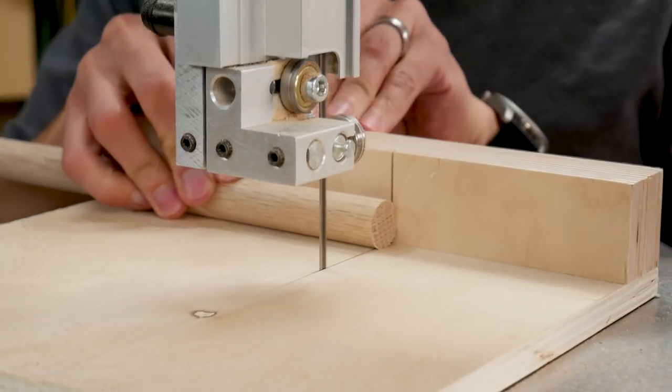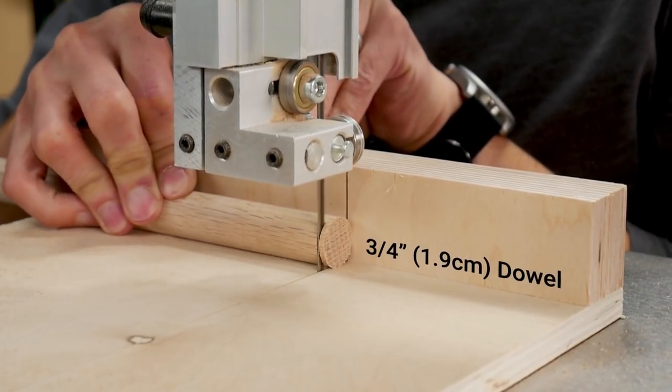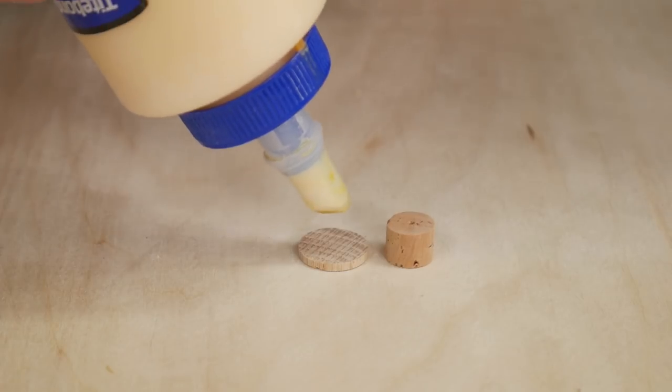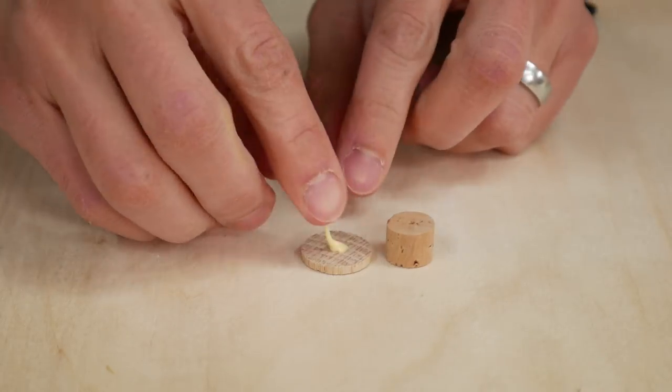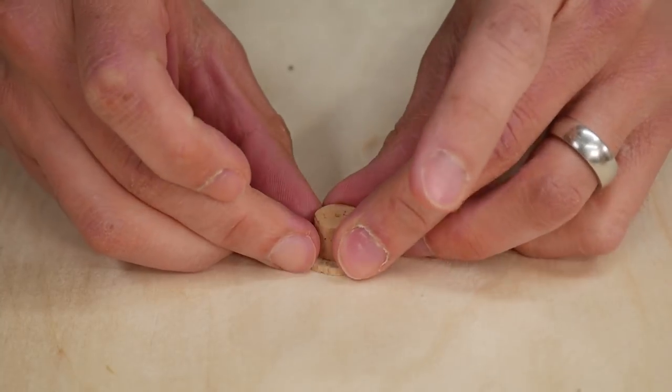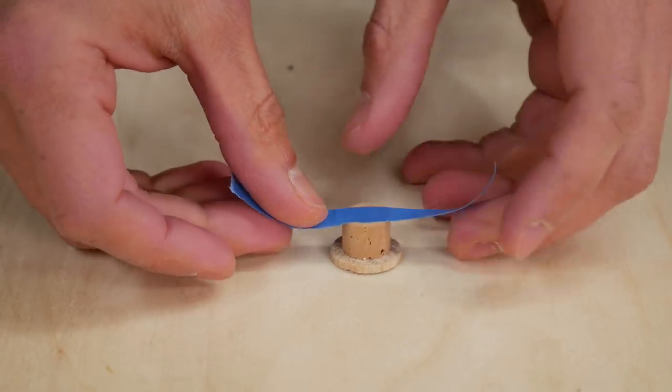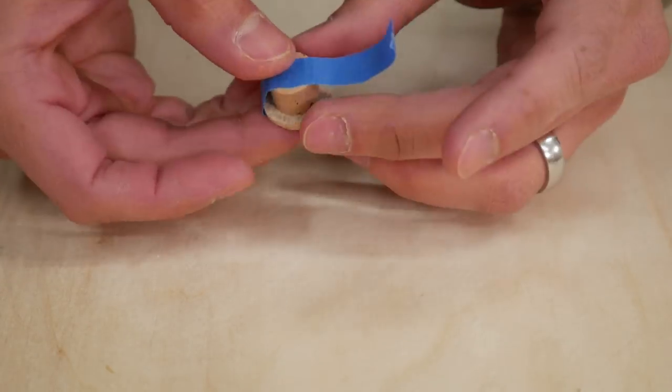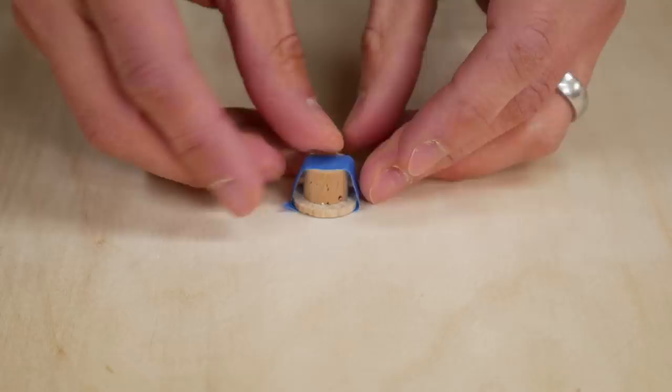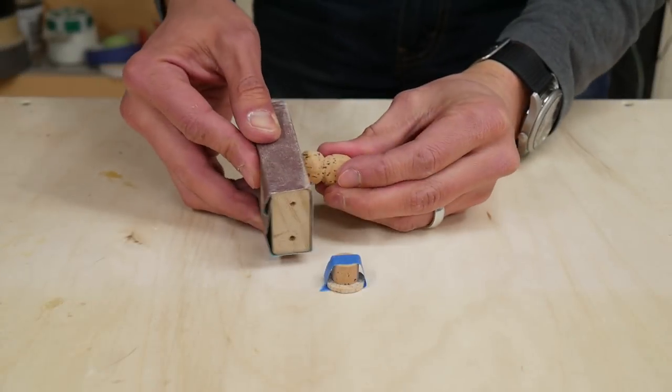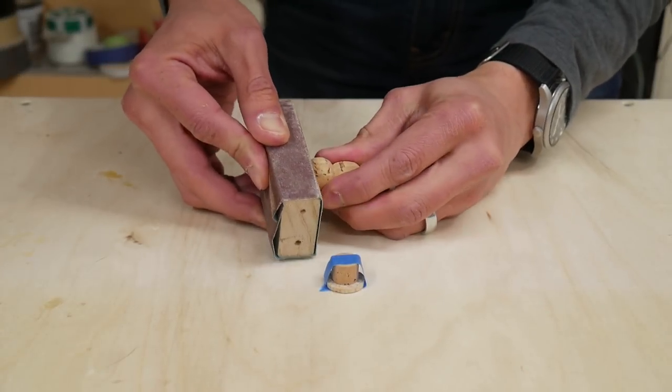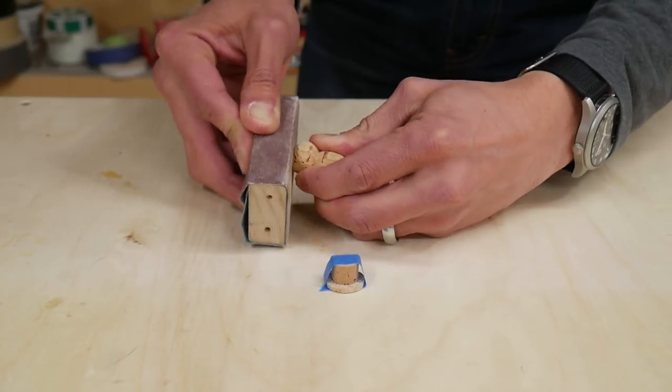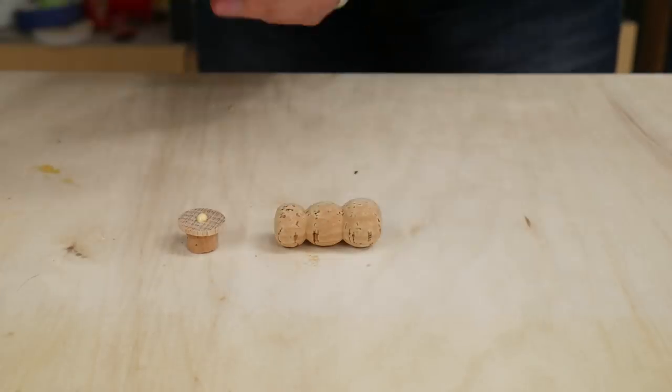Then I got some three quarter inch dowel and cut a thin disc from it. I glued the cork cylinder to the dowel disc to form a hat. I sanded the snowman's head to make a flat spot for the hat. Then glued the hat onto the snowman's head.